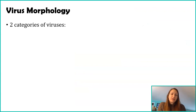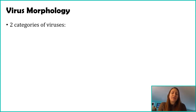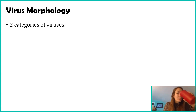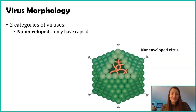The next couple of slides will explore virus morphology — what is the shape and structure of a virus. As mentioned, in a microbiology course you'll learn a lot more about this. I'm going to generalize the most common types of virus morphological states and what they mean in regards to human health. In general, we have two different categories of viruses based on the overall structure.